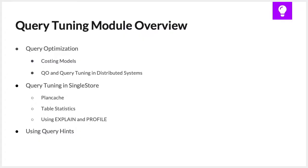In this module, we'll cover the topic of query tuning and run through some of the features SingleStore provides to optimize your query performance. We'll first briefly introduce the field of query optimization, specifically in distributed systems like SingleStore, to better understand how query decisions are made. Then we'll cover the main query tuning tools SingleStore provides to analyze query execution plans and how we can adjust those plans to help us boost performance.